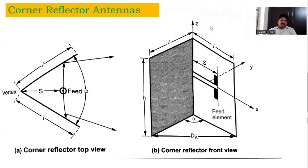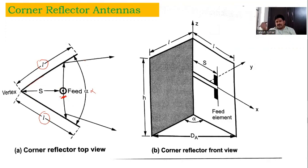If you observe here, this is the top view of the reflector. This is one flat sheet, this is another flat sheet, where L indicates the length of the flat sheets. Alpha is the corner angle, and this is the feed or primary antenna. S is the separation distance between the primary antenna and the vertex of the corner.